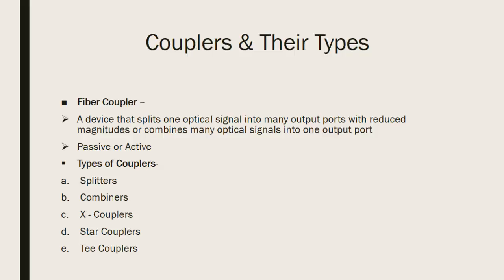A coupler is a device that takes one input signal and splits it into two or many output signals, or it is a device that takes two or more input signals and combines them to form a single output. Couplers can either be active or passive. Active couplers require an external power supply to work, and passive couplers do not require any external power supply.